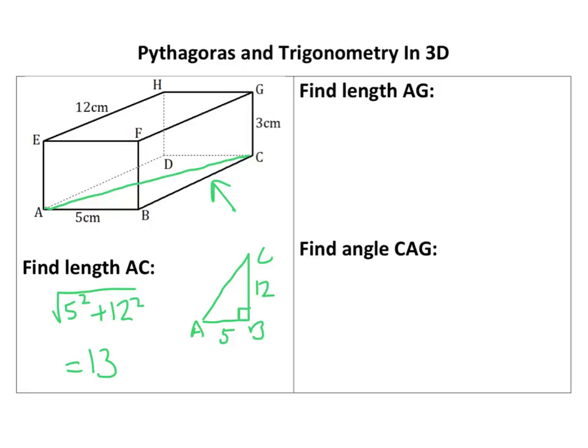If I do the next one in colour, it says then find length AG. So we're going up here. That length I've just worked out is 13. And I have another right angle triangle now, where that's 13, that's A, sorry, that's G, and that is C. And we're told that the height of our cuboid is 3.